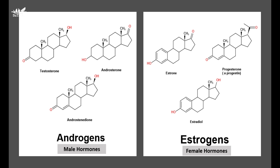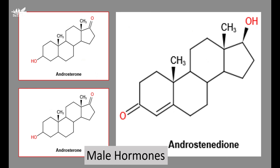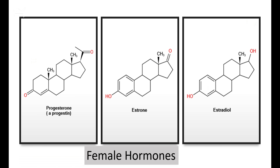Both androgens and estrogens are synthesized by the testes and ovaries. Men and women have both androgens and estrogens, produced by testes in men and ovaries in women respectively. The difference is that androgens predominate in testes of men and estrogens predominate in ovaries of women. The adrenal cortex also synthesizes androgens and estrogens, but to a lesser extent than testes and ovaries.